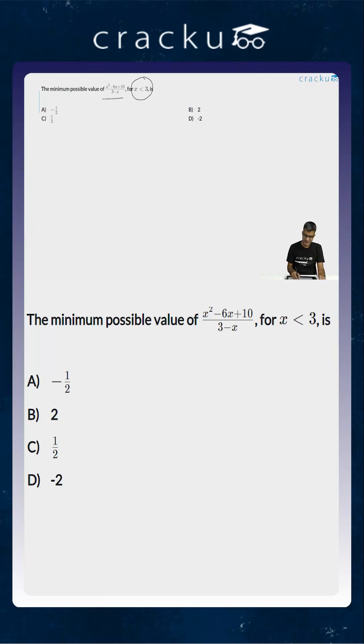As x is less than 3, let the value of p be equal to 3 - x. There are a couple of reasons for this. First, 3 - x is the denominator of the expression. Second, we are told that x is less than 3, so 3 - x, which is p, will be greater than 0.